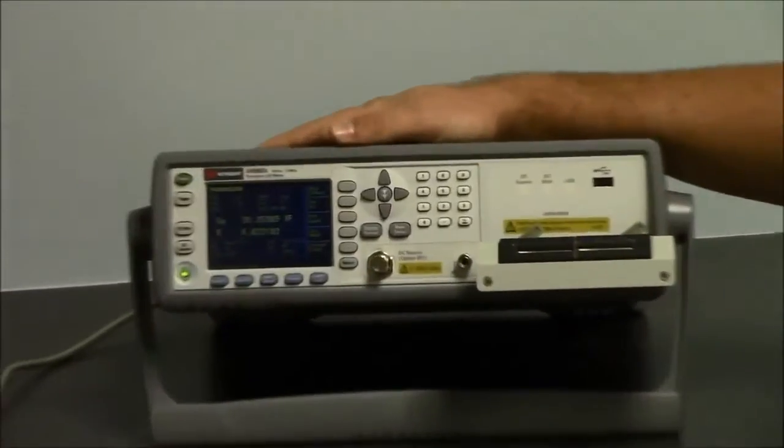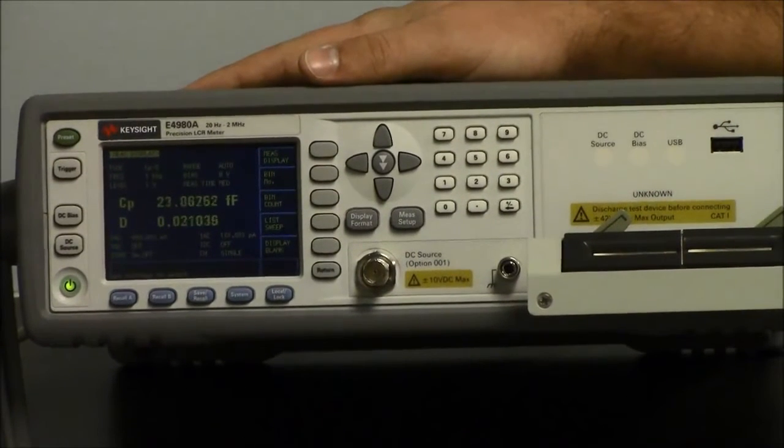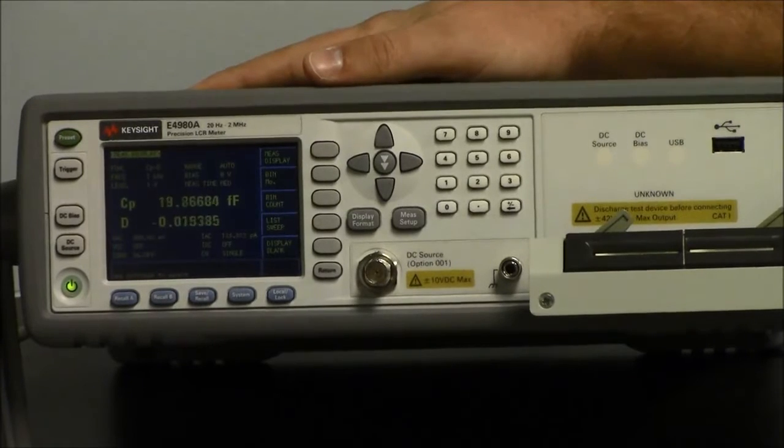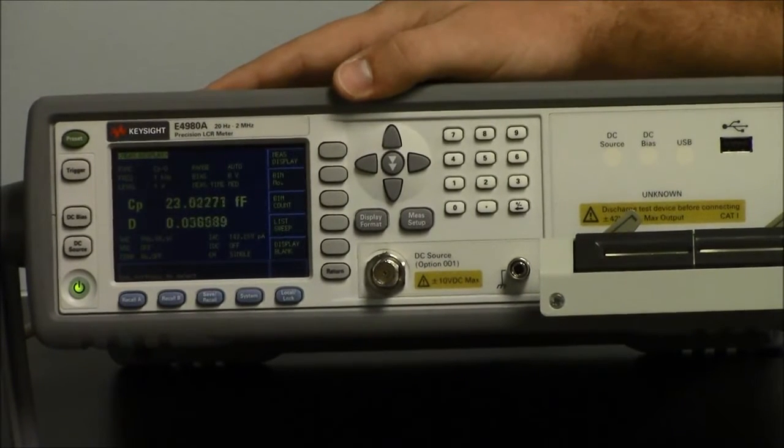Now an open and short correction is important to remove stray admittance and residual impedance from your measurement path. This will enable you to obtain an accurate measurement of your device.